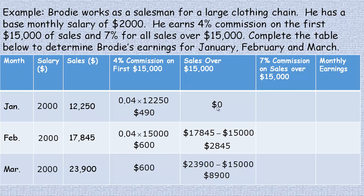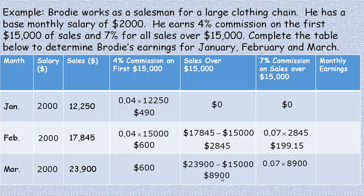For the seven percent commission: January had no sales over fifteen thousand so that's zero. For February, we take the two thousand and forty five and multiply by 0.07 — remember, seven divided by one hundred gives you 0.07. That gives approximately one hundred ninety nine dollars and fifteen cents at the higher rate. For March, we multiply eight thousand nine hundred by seven percent, giving over six hundred dollars in commission at the higher rate.